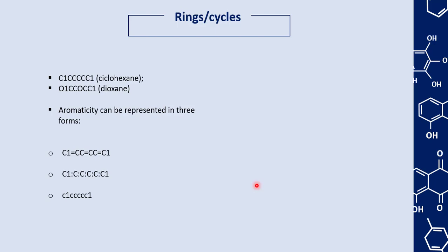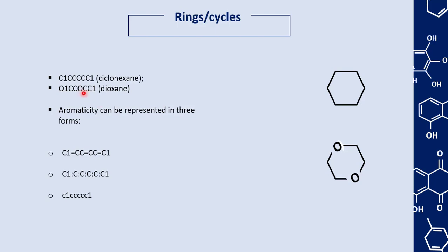We can also represent rings and cycles. For example, to represent cyclohexane — a ring with six carbon atoms — we use the codification C1CCCCCC1, where the number 1 after the last carbon closes the ring. Here we have another example: dioxane, which has two oxygen atoms and four carbon atoms. We write O1 to indicate that this oxygen is the first atom of the ring, followed by two carbons, another oxygen, and two additional carbons, ending with C1 to close the ring.